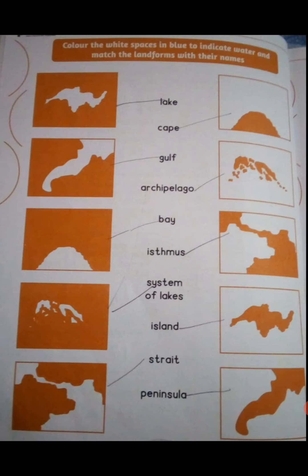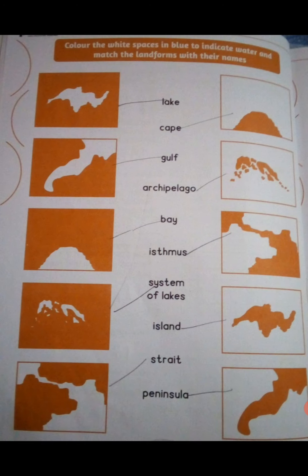Now you have to color the white spaces with blue. The white spaces have to be colored blue. So don't be confused if you see orange and white — you just have to match and color the white spaces with blue.